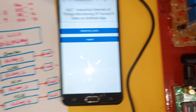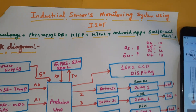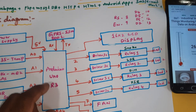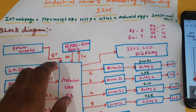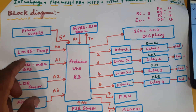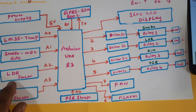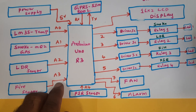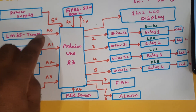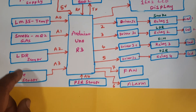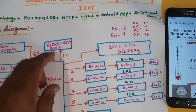So we are using this block diagram: Industrial Sensors Data Monitoring using IIoT. In this project we are using an Arduino Uno R3 board and a power supply module providing 0 to 9 volts, converted to 5 volts. We are using 5 sensors total: LM35 temperature sensor connected to A0, smoke sensor to A1, LDR sensor to A2, fire sensor to A3, and PIR sensor to A4.